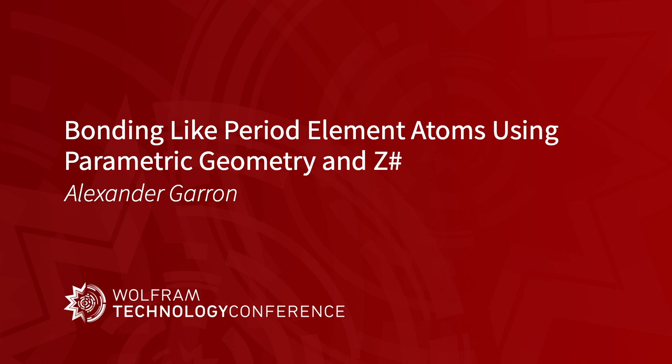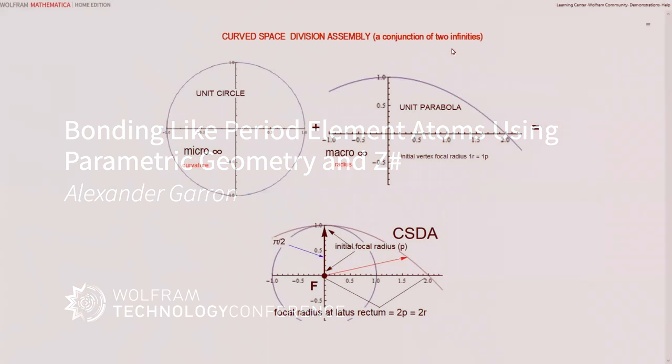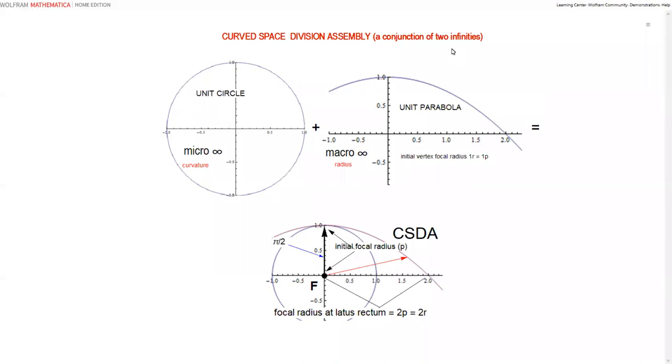It all begins with curve space central force mechanics. I explore central force curve space using a computer-based mechanical contrivance called a curve space division assembly. Take code for a unit circle, add code for a unit parabola, and we have a parametric CSDA. What makes the CSDA perfect for shaping central force energy curves is the dependent curve initial focal radius p is congruent with the pi over 2 spin radius of the independent curve at inception.